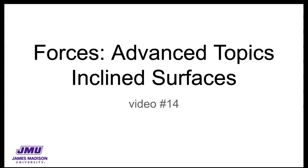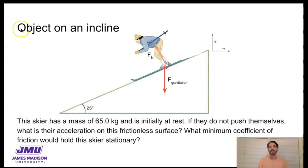In this video, the advanced topic I'd like to talk about is what you do if you have an object that is placed on a surface and that surface is not horizontal. For example, we have this skier. The mass is given to us at 65.0 kilograms. The skier is initially at rest. If they don't push themselves, what is their acceleration on this frictionless surface?